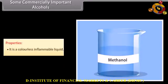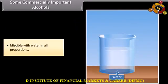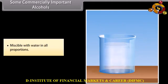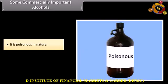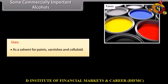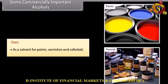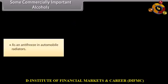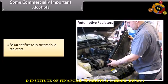Properties of methanol: it is a colorless, inflammable liquid, miscible with water in all proportions, and poisonous in nature — when consumed it causes blindness and even death. Uses: as a solvent for paints, varnishes and celluloid; for denaturing industrial alcohol to make it unfit for human consumption; and as an antifreeze in automobile radiators.